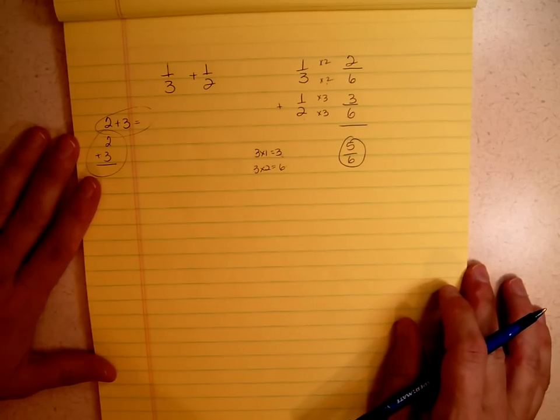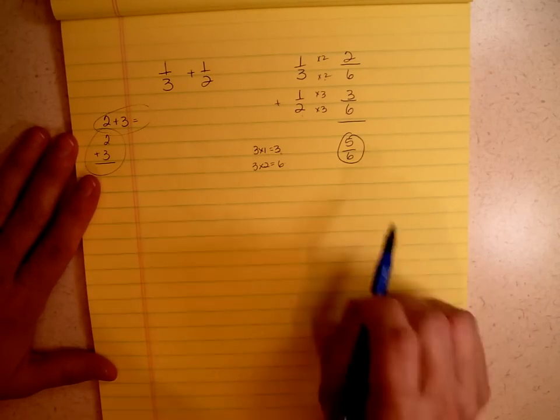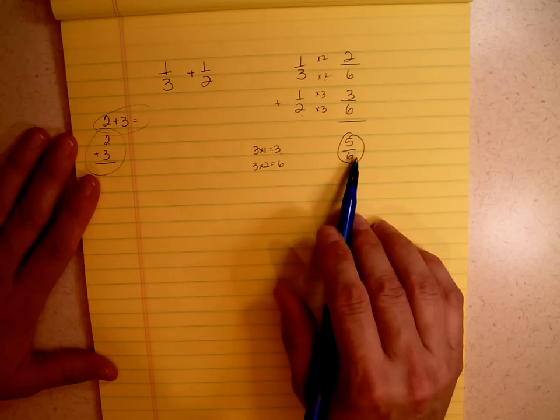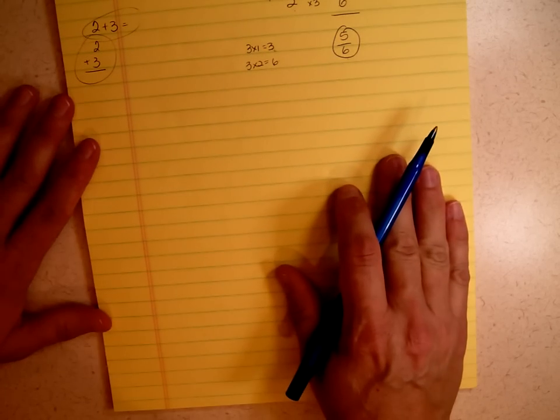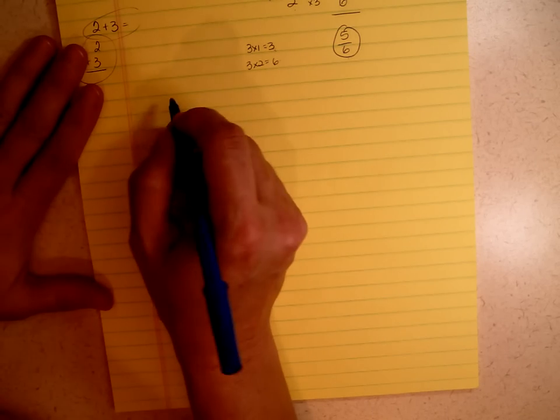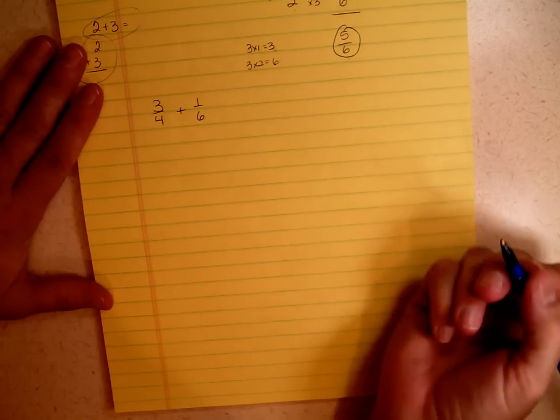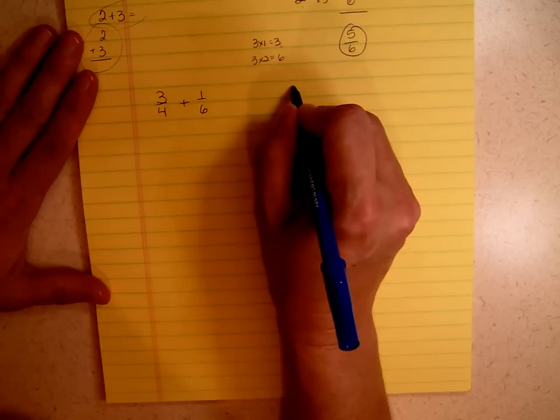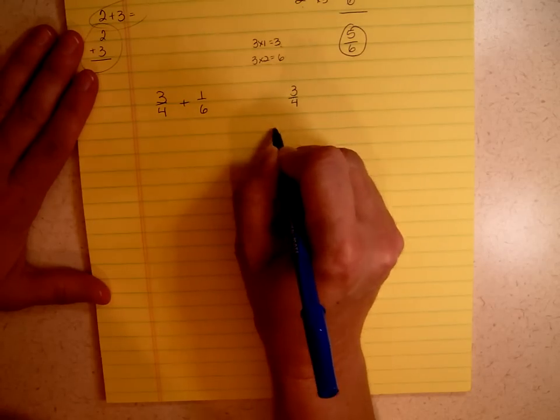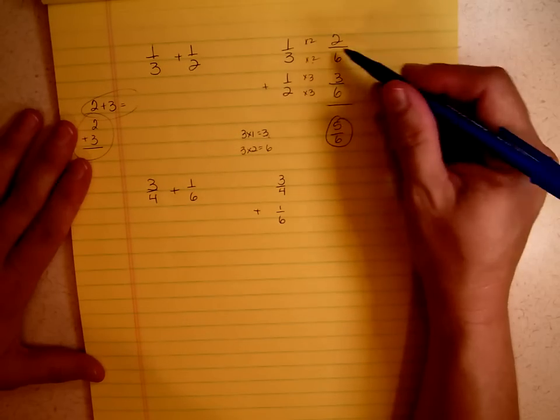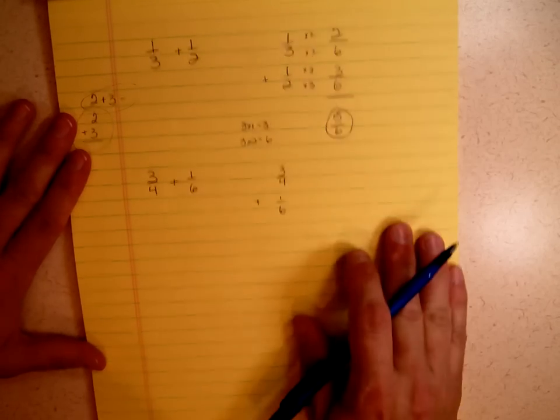As you can see, using the traditional algorithm, it usually gives you an answer that you don't have to reduce, although sometimes you do. Once in a while you'll have to if you didn't find the least common denominator, but instead just found a common denominator. Let's try another problem. Three-fourths plus one-sixth. Again, I like to rewrite it as three-fourths plus one-sixth.